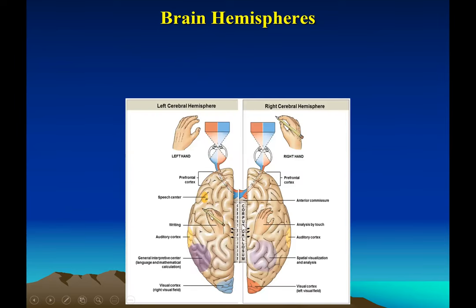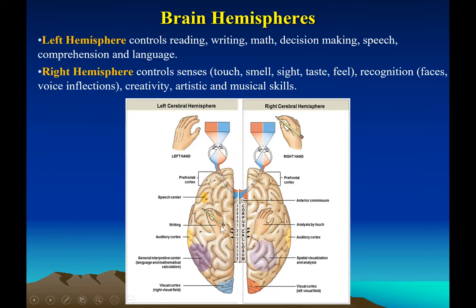When you say you are left-brain dominant, you tend to be good at reading, writing, math, decision-making, speech, and language comprehension. The right hemisphere controls creativity, artistic nature, musical abilities, and abstract thinking, with highly developed senses of touch, smell, and taste. The right hand is controlled by the left brain, and the left hand is processed in the right brain.